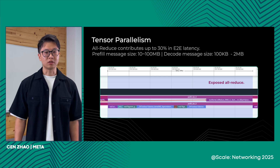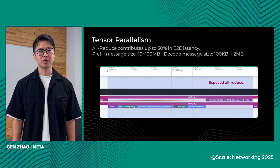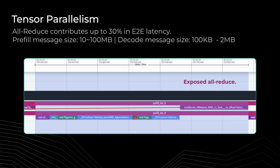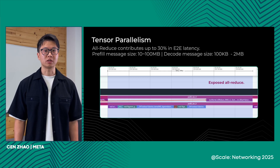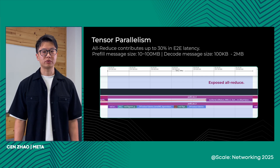Looking at a trace from our real production workload, the NCCL kernel all-reduce takes up to 30% of end-to-end latency — pretty significant. This means any 10% improvement in all-reduce gives us about 3% end-to-end gain. Prefill messages range from 10 to 100 megabytes, while decoding messages are even smaller, ranging from 100 KB to 2 megabytes. So the question is: how do we improve all-reduce for such small messages?